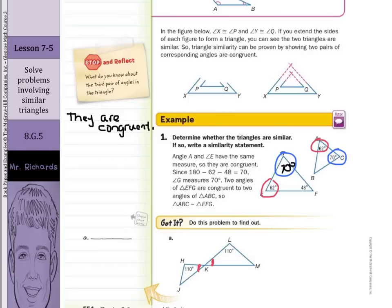So, here we have angle L being congruent to angle H and we have angle LKM being congruent, and LKM represents this angle to angle H, K, J.